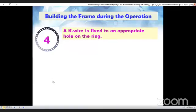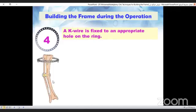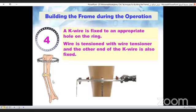Step four, fix the key wire to the appropriate hole in the ring and tighten the far end initially. Then tension the wire and tighten the near end of the key wire too.